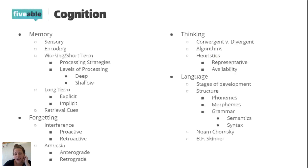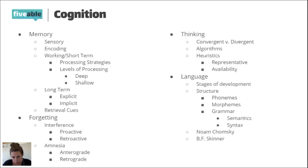There's thinking and the different forms of thinking. Convergent versus divergent thinking, when we use algorithms versus heuristics, and the difference between the types of heuristics. Then there's language development: we first start by babbling, then the one-word stage, two-word stage, and then phonemes, morphemes, and grammar.